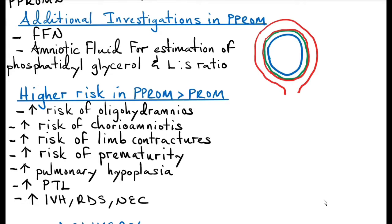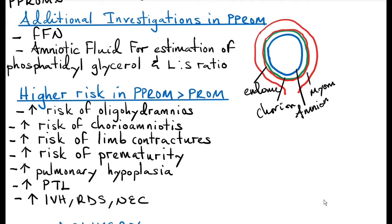If a patient comes to you with PPROM and you want to predict the risk of preterm labor occurring, you can do a test called fetal fibronectin. Fetal fibronectin is a protein that glues the amniotic sac to the endometrium. It is found between the amniotic sac and the endometrium.